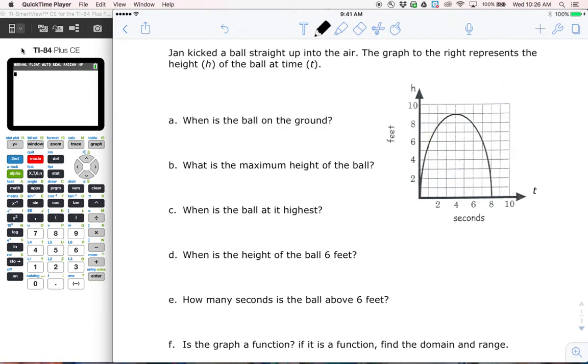Now, I'm actually doing a video not from the notes today, but just from an exploratory paper because I think it's a little bit better, so if this looks a little different, that's why. All right, here we go. Jan kicked a ball straight up into the air. The graph represents the height of the ball at time t. We've got feet for our vertical axis and seconds for our horizontal axis, and we're going to answer the questions based on this graph.